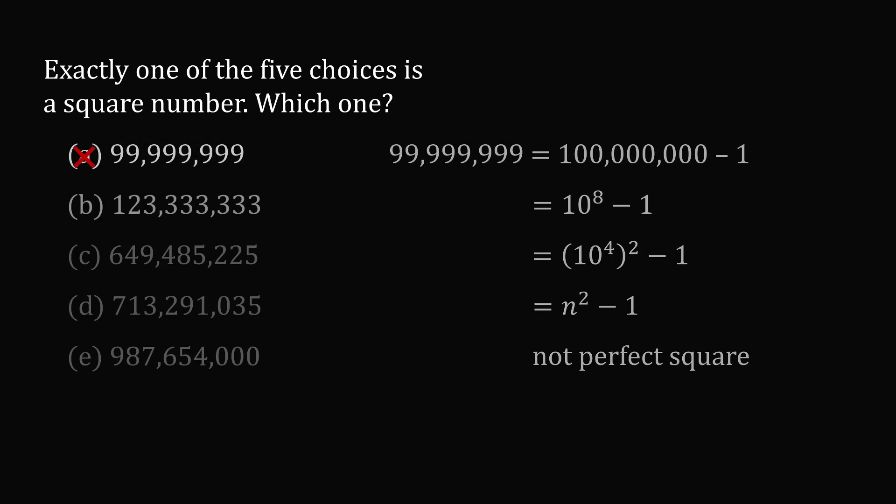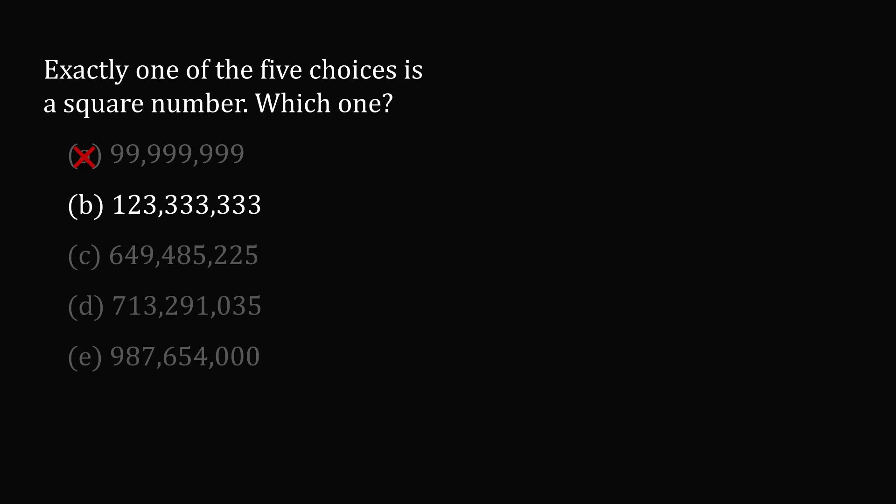Let's now consider answer choice B. To analyze this number, look at the very last digit, which is the digit 3. Is it possible for a perfect square to end in the digit 3? Let's consider the squares of the numbers going from 0 to 9. 0 squared is 0, 1 squared is 1, 2 squared is 4, 3 squared is 9, 4 squared is 16, 5 squared is 25, 6 squared is 36, 7 squared is 49, 8 squared is 64, and 9 squared is 81.